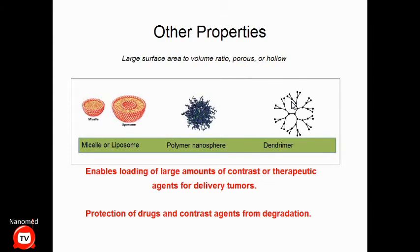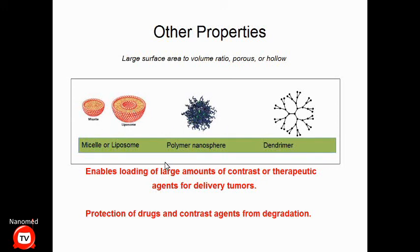Another useful property of nanostructures for medical applications is that nanoparticles can be designed with a large surface-area-to-volume ratio. They can be porous with holes inside, or hollow, allowing you to load a large amount of contrast or therapeutic agents for tumor delivery. Instead of injecting a chemotherapeutic agent and hoping enough reaches the tumor, you load hundreds and thousands of drug molecules inside these carriers. This also protects the drug from being degraded or broken down by the biological system, improving delivery efficiency.